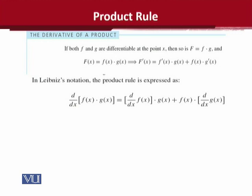If we want to write this in Leibniz notation, in the form of d over dx, it is very easy. d over dx of f of x times g of x gives the same result, and then f of x comes as is, and the derivative of g of x can be written in the d over dx form. Both notations mean the same thing; only the notation style is different.